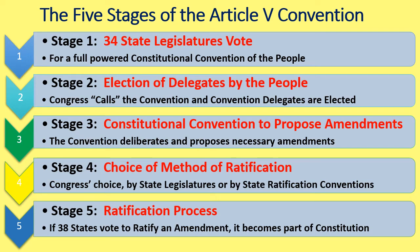Stage one of the Article 5 convention is the stage we're in right now. You need two-thirds of the state legislatures to vote to begin the constitutional convention — that's 34 state legislatures. They must vote for a full-powered constitutional convention of the people. This means they may not attempt to limit the constitutional convention as to any particular amendment, topic, or even slate of topics. That is one of the problems we're having right now: we need to get the state legislatures educated and understanding what they should be voting for, which is the full-powered constitutional convention.